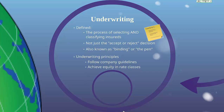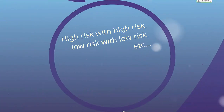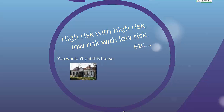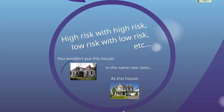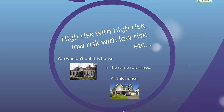The other important underwriting principle is to achieve equity in rate classes, which basically means you want to put high risks with high risks and low risks with low risks. For example, you wouldn't put a dilapidated, poorly maintained house in the same rating class as a house in pristine condition. Even though they may be of the same construction type, you wouldn't want them in the same rating class, because you'd expect the first to have a higher rate of loss — and it wouldn't be fair to insureds in the second class to pay the same premium.